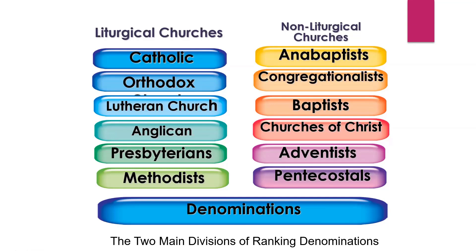The course itself is divided into two categories. The first part deals with liturgical churches, and we take time with six liturgical churches in the course. The second part of the course deals with non-liturgical churches, and we divide it into six categories — six on one side, six on the other. Part one deals with liturgical churches, and part two deals with non-liturgical churches, both bringing us into this whole idea of what denominations are and how they came about.